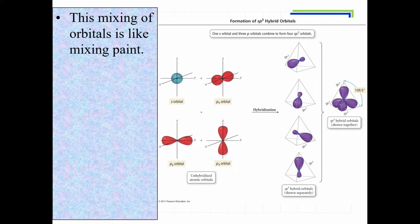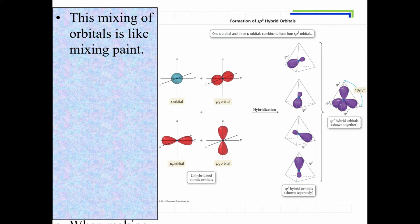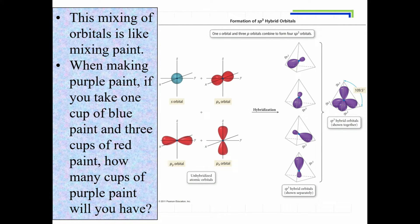So the mixing of these orbitals - I want you to think of it like the mixing of paint. Notice how I've got blue and red making purple. If I were to take one cup of blue paint and three cups of red paint, I would get purple paint - and how many cups of purple paint would I have? If you take the one cup of blue and three cups of red, you still have four cups. So what we will have is: I put four orbitals in and mix them, I am going to get four orbitals out.